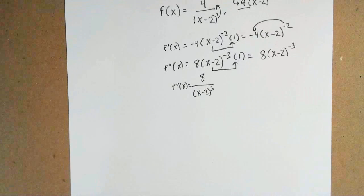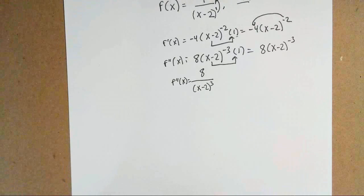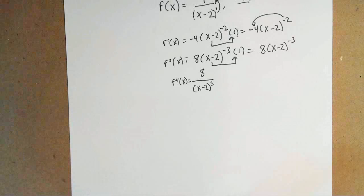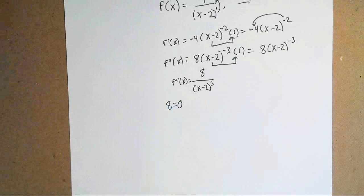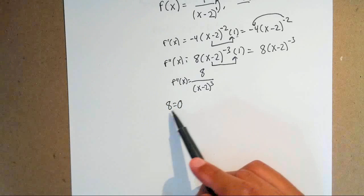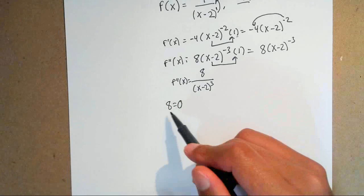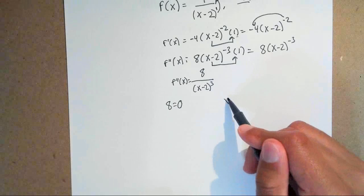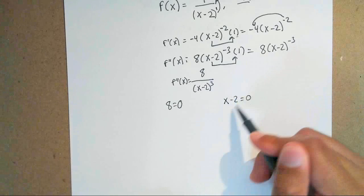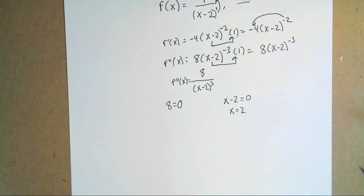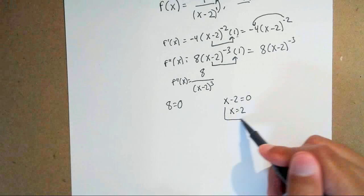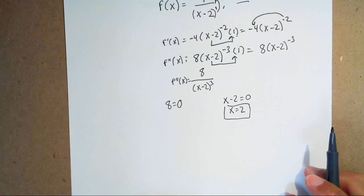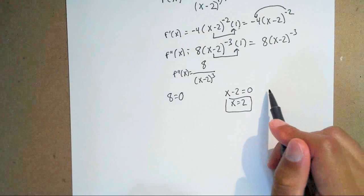Once I have my second derivative, anytime you want to find critical numbers for a rational equation, set the numerator equal to 0 and set the denominator equal to 0. Setting the top equal to 0 gives 8 equals 0, which isn't true, so there are no critical numbers from the numerator. Setting the bottom equal to 0 gives x minus 2 equals 0, so x equals 2. That's my only critical number, and I place it on a number line.